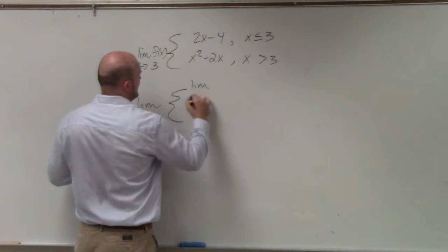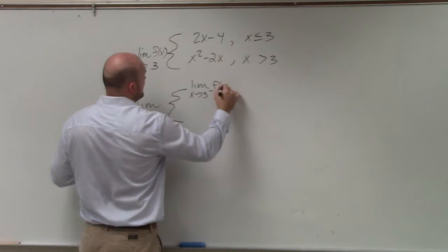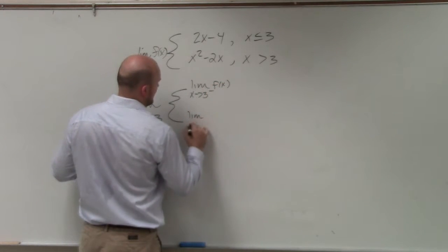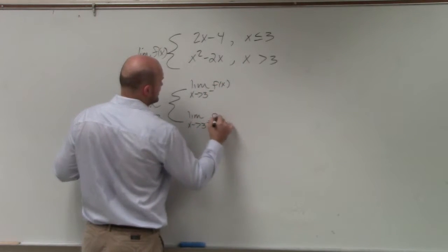So we just do limit as x approaches 3 from the negative of f of x, and the limit as x approaches 3 from the positive of f of x.